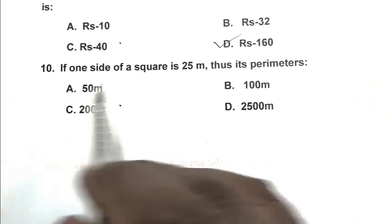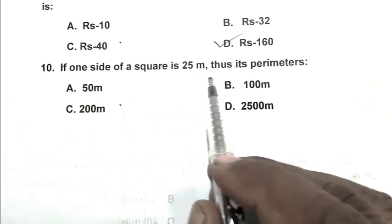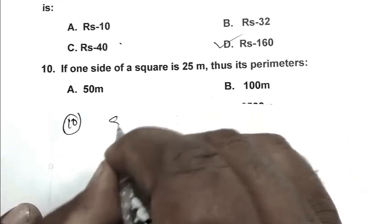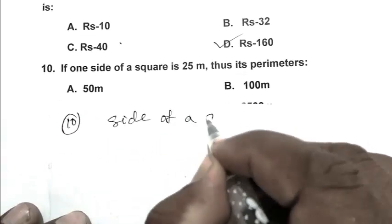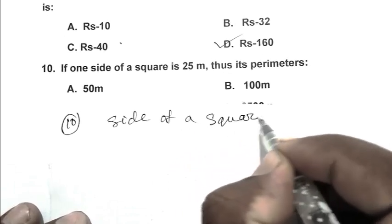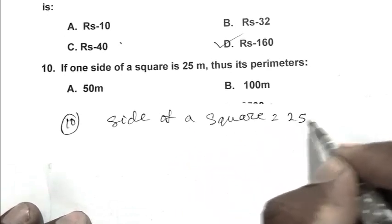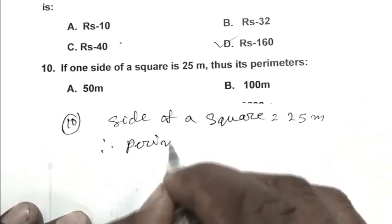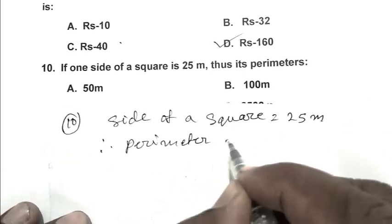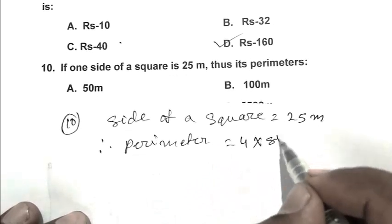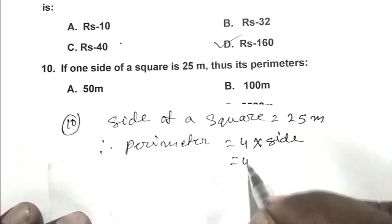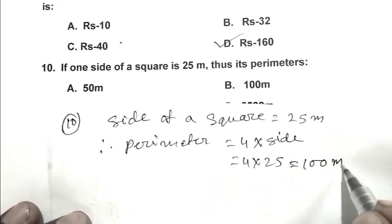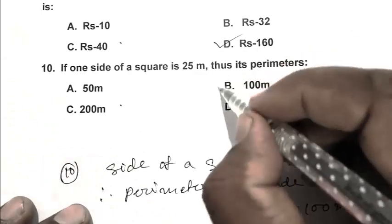Question number 10: If one side of a square is 25 meters, thus its perimeter? Side of a square is 25 meters. Therefore perimeter equals 4 into side, that is 4 multiplied by 25, that is 100 meters. So B is the right answer.